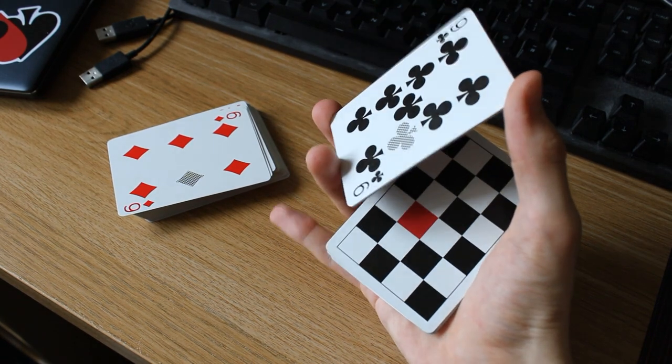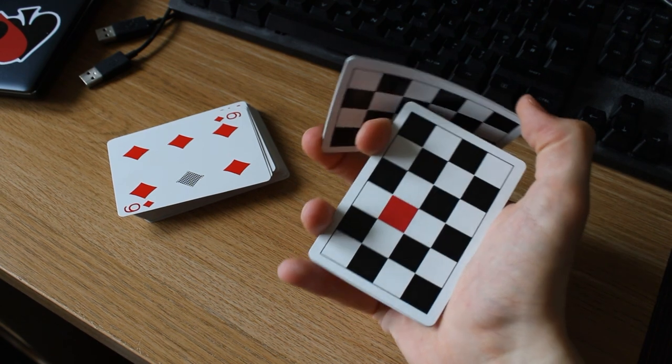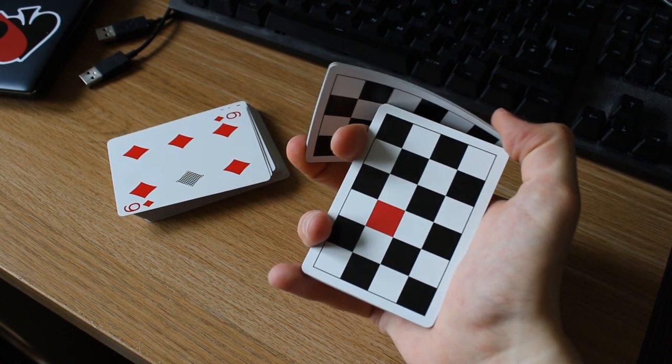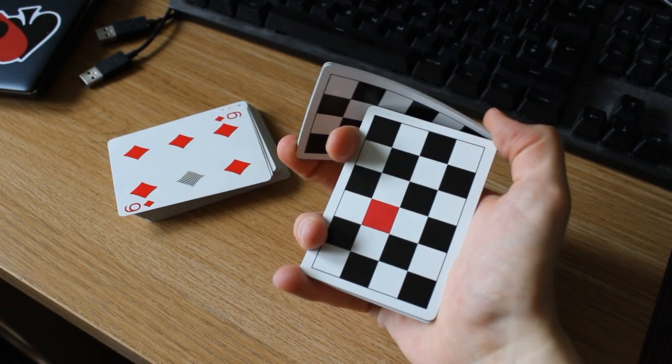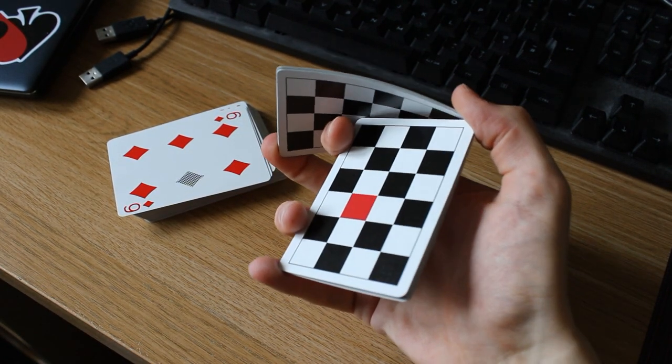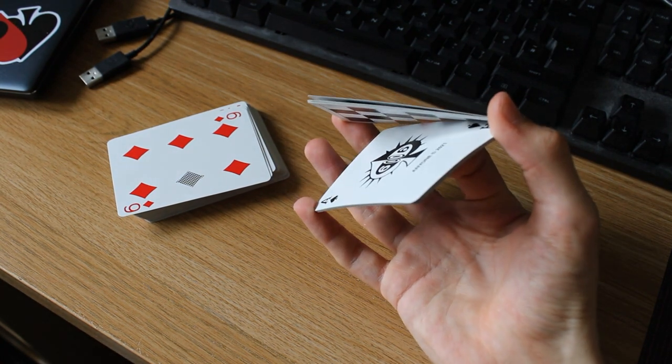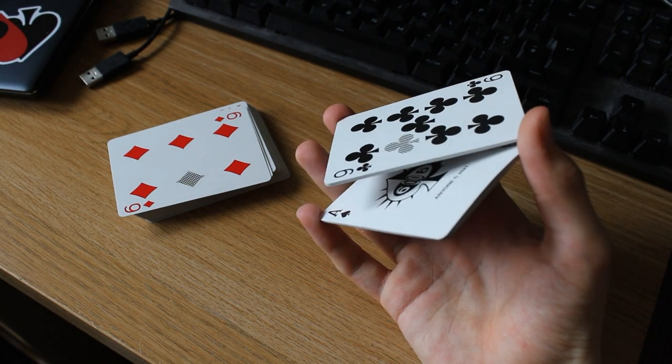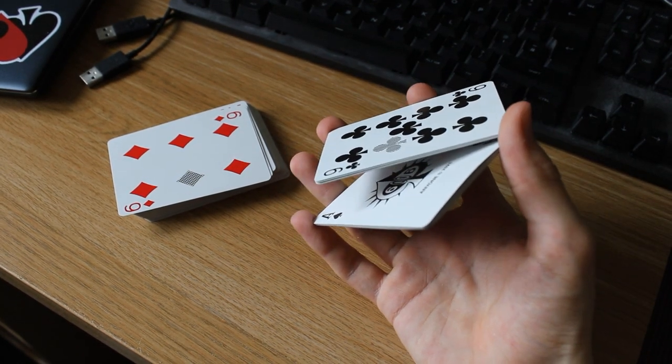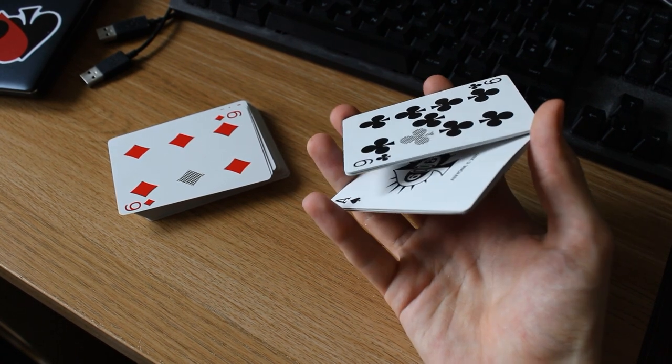You should be able to spin that like so, and then it ends up like that. Now your pinky and your thumb grab the corners of this packet here, and you're going to use your index to spin that like so. Now you're in this position.